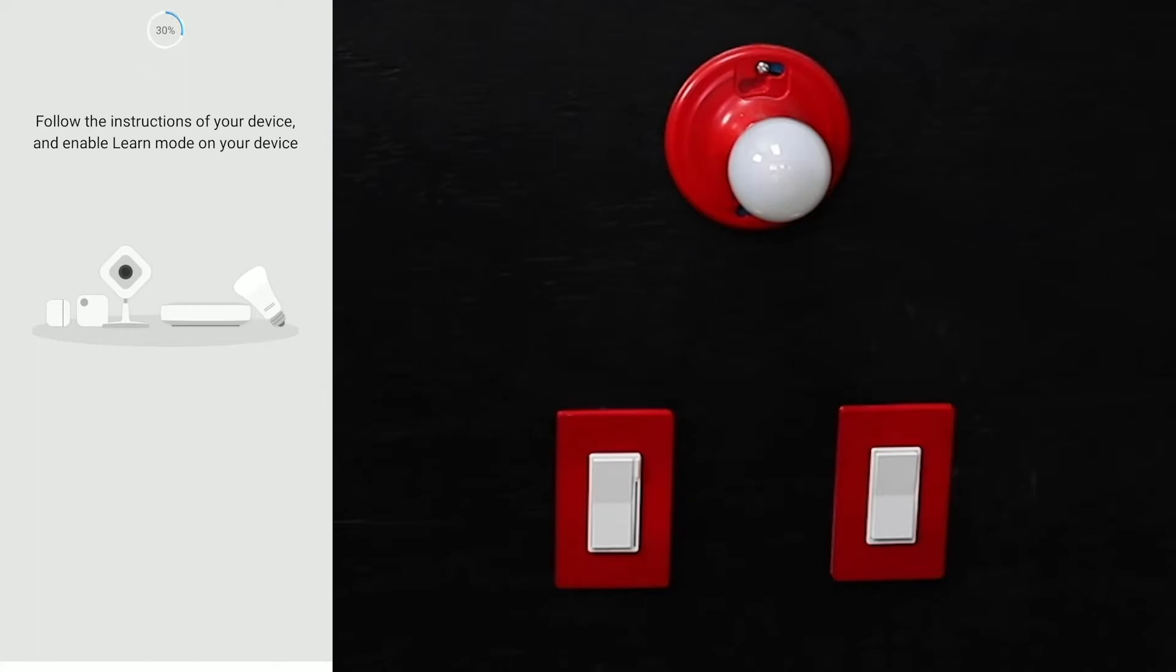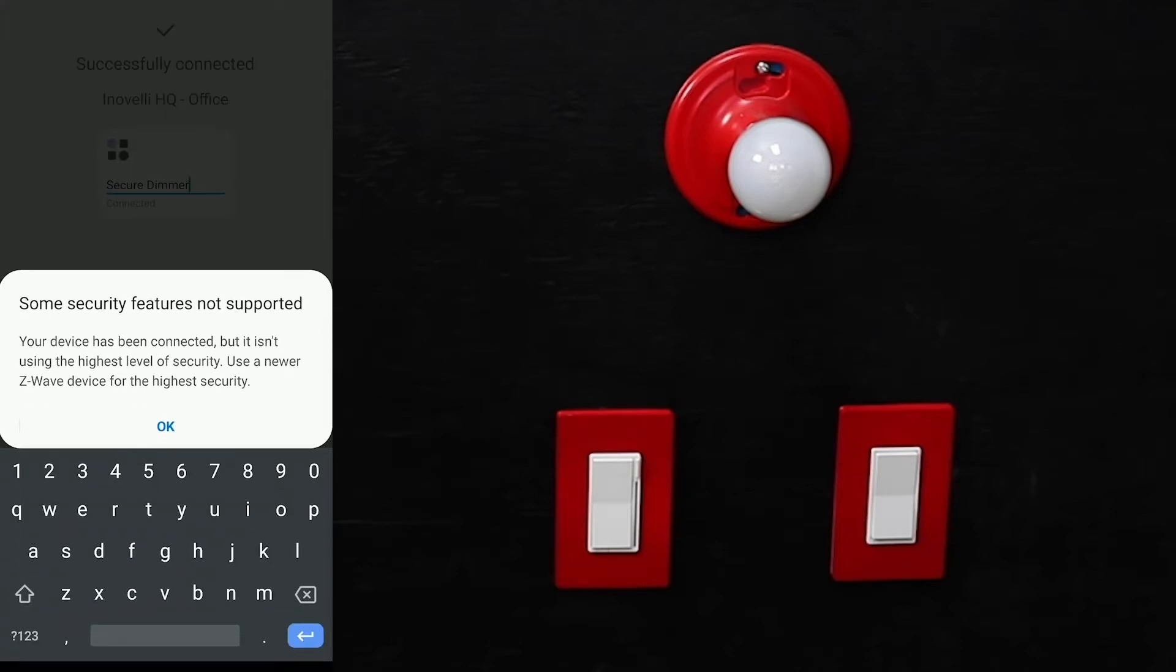Now we'll wait for the actual app to recognize that the switch is paired. This sometimes takes 10-15 seconds, so we'll wait for it. If it doesn't ever show up on this screen - which luckily it just did - but if it didn't, you can just exit out of the app and open it back up. The important thing is that the LED bar turns green.